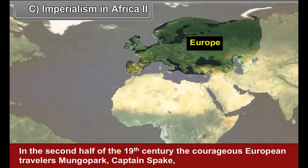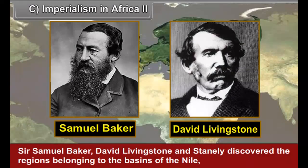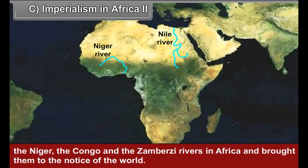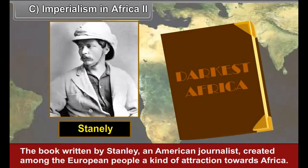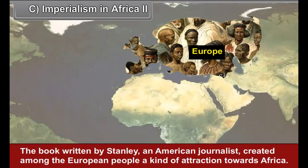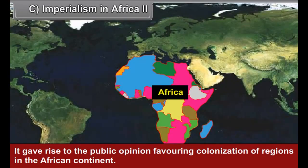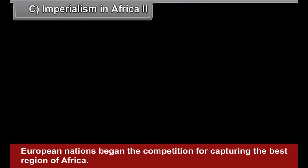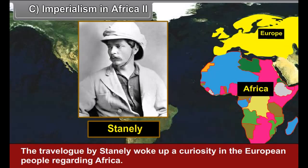In the second half of the 19th century, the courageous European travellers Mungo Park, Captain Speke, Sir Samuel Baker, David Livingstone and Stanley discovered the regions belonging to the basins of the Nile, the Niger, the Congo and the Zambezi rivers in Africa. The book written by Stanley, an American journalist, created among the European people a kind of attraction towards Africa. It gave rise to public opinion favoring colonization of regions in the African continent, and the European nations began the competition for capturing the best regions of Africa.